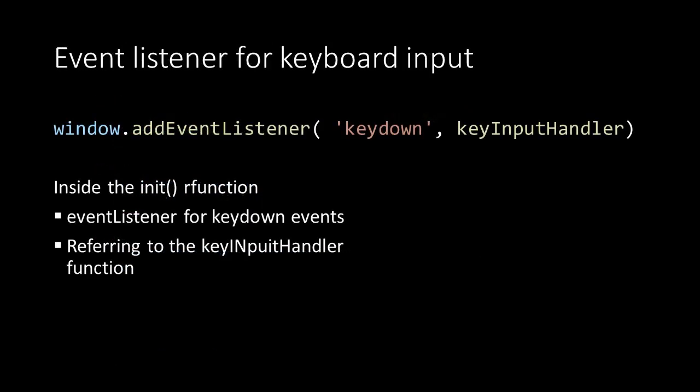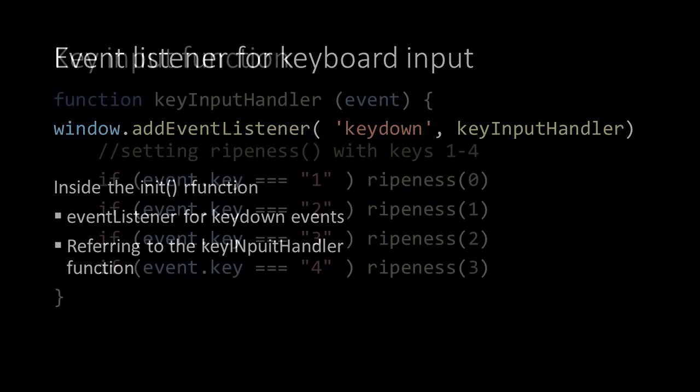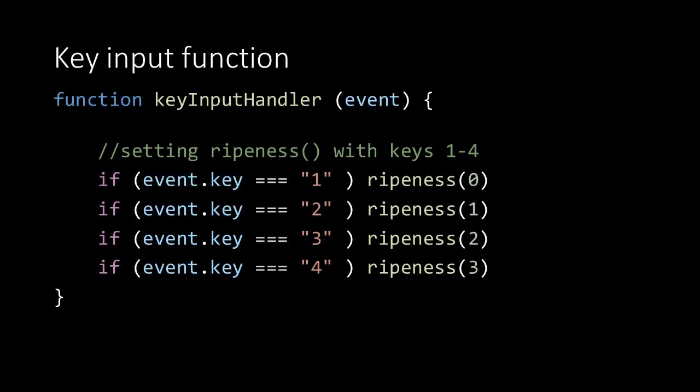In the init function we'll add an extra event listener. The event listener listens to the keydown event and calls the key input handler function. Based on an if statement and the key in the keydown event, we'll call the ripeness function with the appropriate prediction.